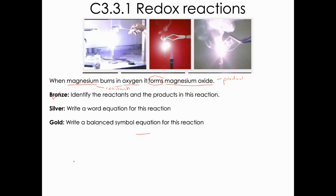To write a word equation, you have an arrow going from left to right. You write your reactants on the left — magnesium and oxygen — and then on the right-hand side of the arrow, we have our product, which is magnesium oxide.